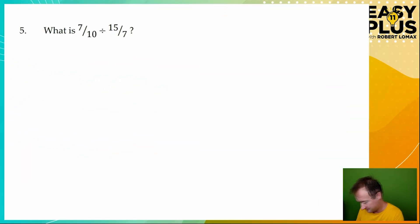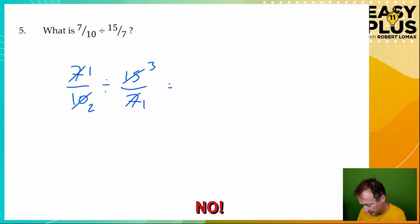A little bit of practice here. Now you might be tempted to take my method from earlier and do something like this. Seven and seven, they both divide by seven. Fifteen and ten, they both divide by five. Okay, so then we just need to flip the second one over. So we've got a half times one over three equals one over six. No. Remember what I said earlier. You can only cancel diagonally when you are multiplying. And here we've got a very clear division sign in the middle, which means that you cannot do this because it will give you a completely wrong answer.